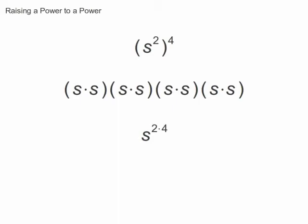When you raise a power to another power, you multiply the two powers together. This works because if we expand the expression, we find groups of the same size. If we multiplied the number of bases in each group by how many groups there are, we would arrive at the same answer.